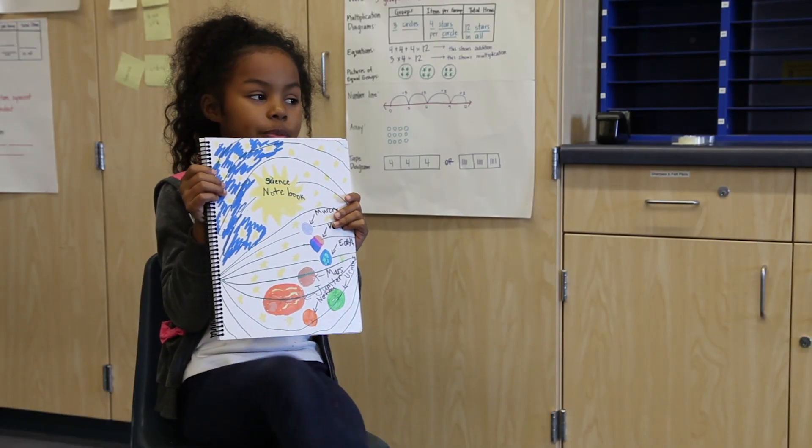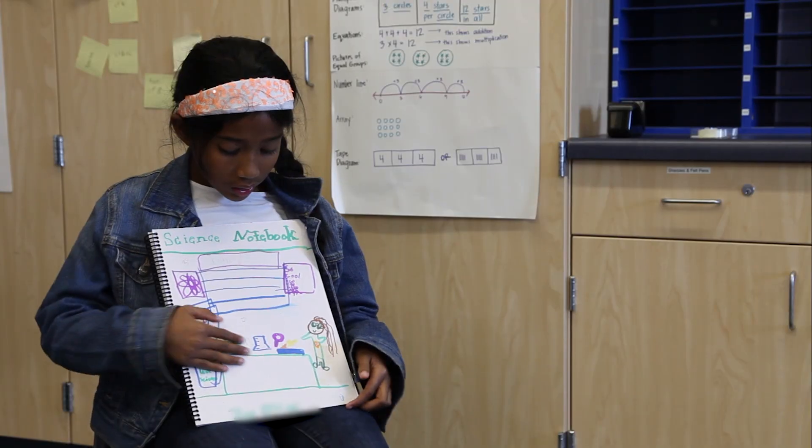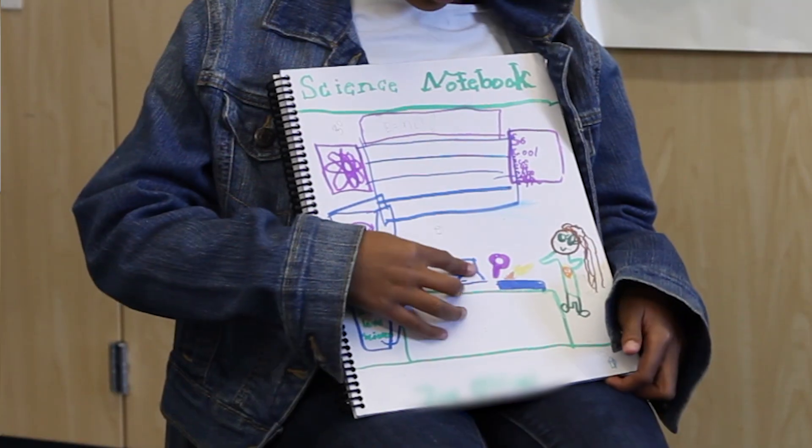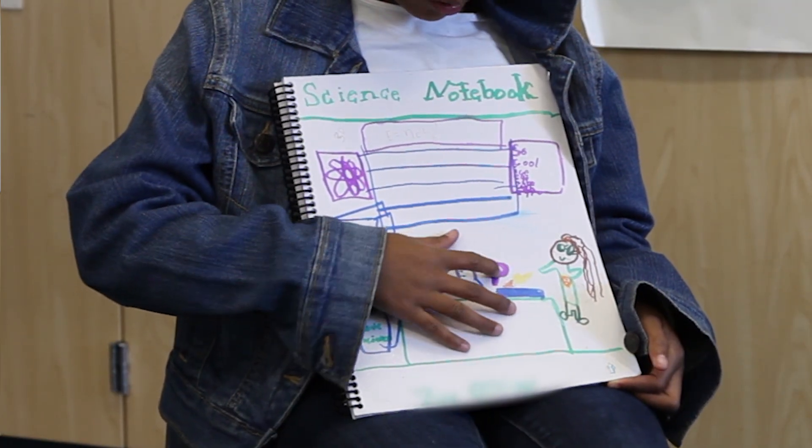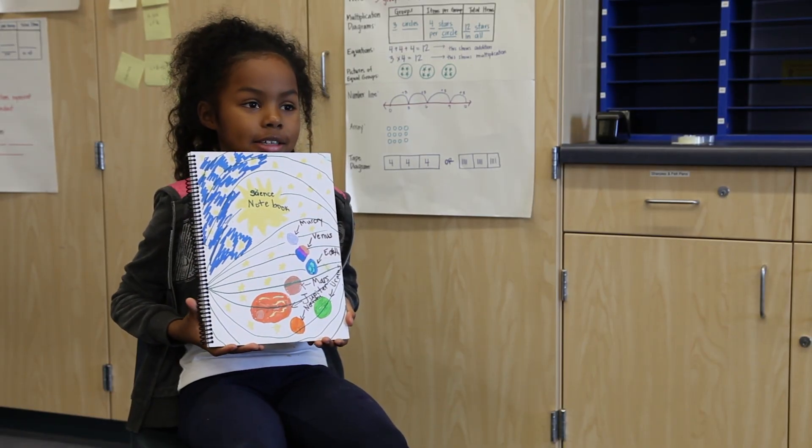I chose to put the solar system because it's mostly about science. And then it looks like it has beakers and I'm discovering something with a magnifying glass. And I like planets. They're so colorful.